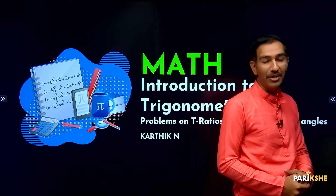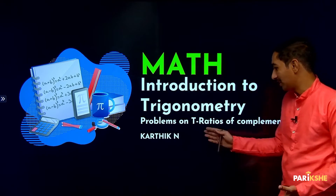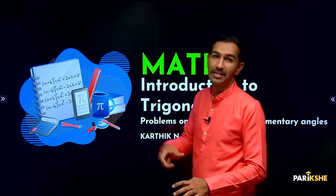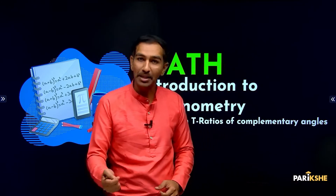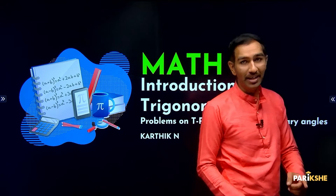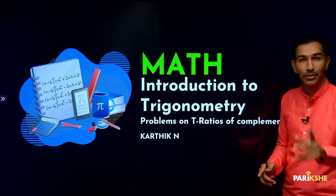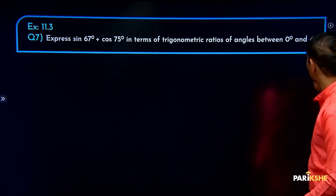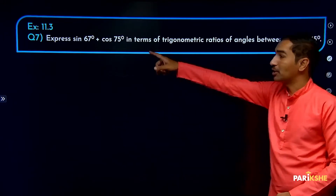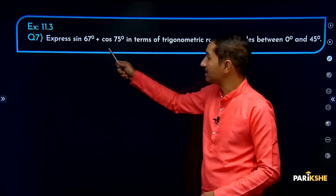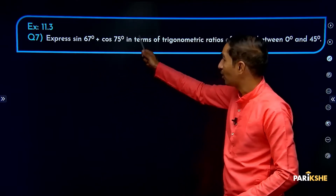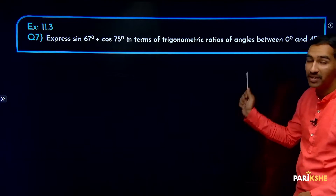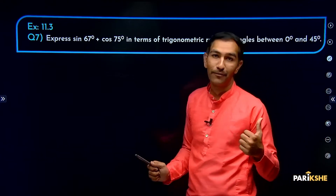These are the T ratios of complementary angles. Now let's see what type of questions come based on this concept and solve them using complementary angles. First question: Exercise 11.3, Question number 7 — Express sin 67 degrees plus cos 75 degrees in terms of trigonometric ratios of angles between 0 and 45 degrees.